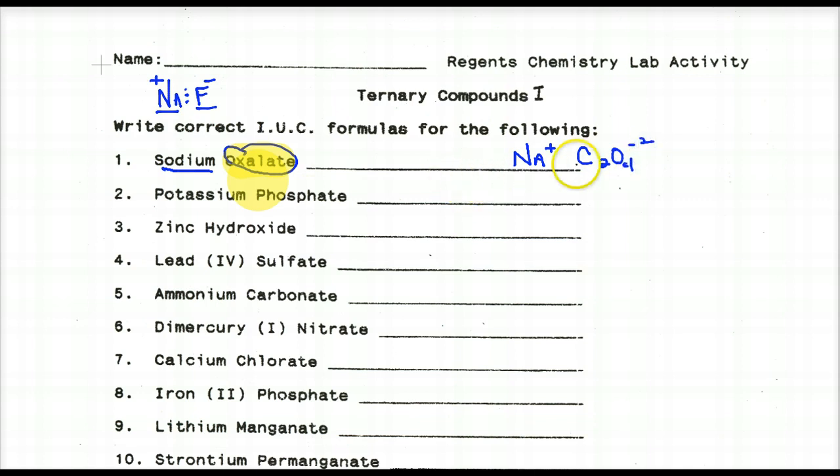Now I'm going to figure out, just like I did before with the binary compounds, what arrangement of these ions, how many of each I need to make them electrically neutral. This is positive one. This is negative two. So I need two of these positive ones for every one of these. So my formula is Na2, two positive sodiums for every one of these oxalate polyatomic ions. Potassium phosphate.